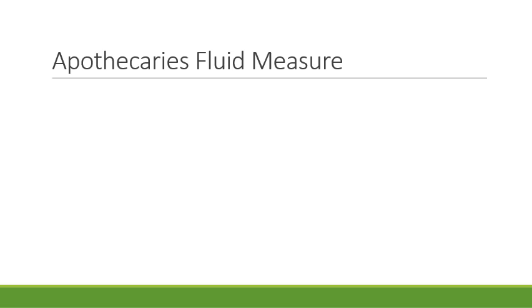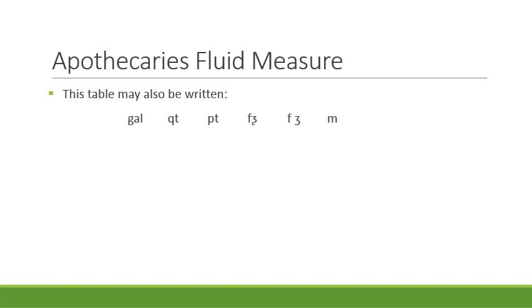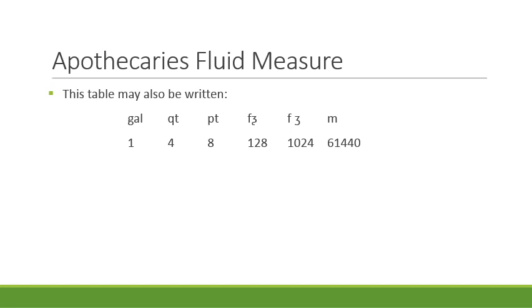In the apothecary system, the inter-unit conversion can be done as follows. The units for the measurement of fluids are: gallon, quart, pint, fluid ounce, fluid dram, and minim. One gallon is composed of 4 quarts, 8 pints, 128 fluid ounces, 1024 fluid drams, and 61,440 minims.